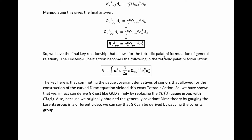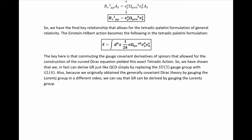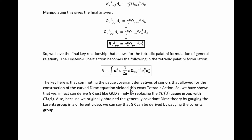So we have the final key relationship that allows for the Tetradic-Palatini formulation of general relativity — specifically, it allows us to prove that the action we got from our QCD-style analysis of the generally covariant Dirac equation yields the Einstein-Hilbert action. If we take the Einstein-Hilbert action and plug this value in for the Riemann curvature tensor, and then write the square root of negative determinant of the metric pre-factor in terms of the tetrad, we arrive at this tetradic action. The key is that commuting the gauge covariant derivatives of spinors — which allowed for the construction of the curved Dirac equation — and then constructing the only sensible action from it, yielded this exact tetradic action. So we have shown that we can in fact derive GR like QCD, simply by replacing the SU(3) gauge group with GL(4).